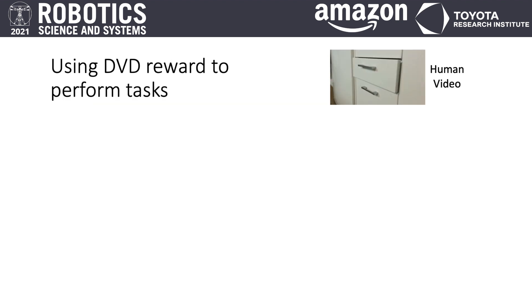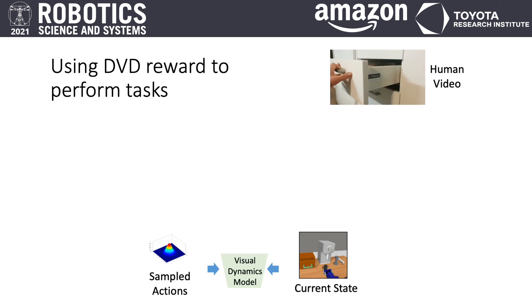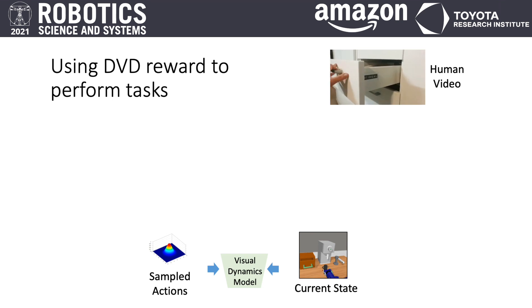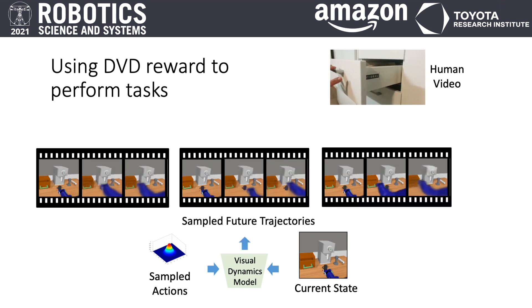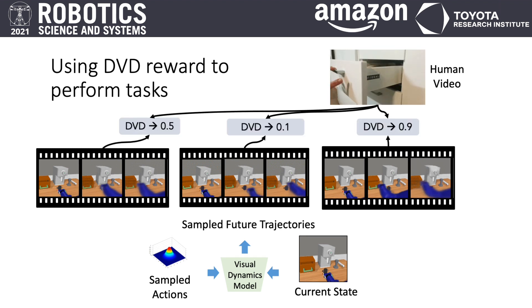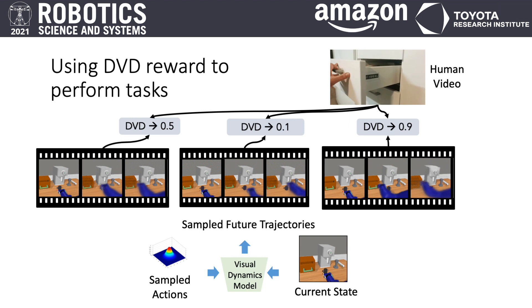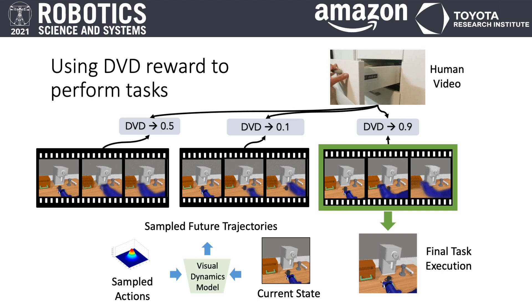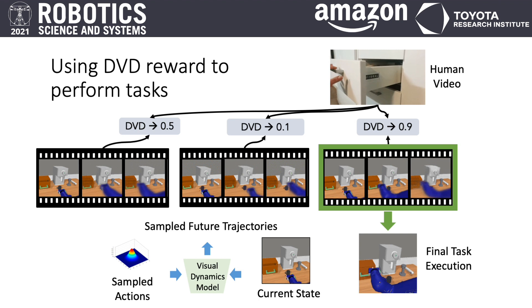In practice, we use DVD in the following way. Given a human video of a potentially unseen task, we want our agent to complete that task in its environment. At the robot's current state, we perform model predictive control, first sampling action trajectories and feeding them into a learned visual dynamics model. The visual dynamics model then predicts corresponding sequences of image states. We feed these predicted image trajectories along with the given human video into DVD, which gives us a measure of how functionally similar each trajectory is to the given video. Finally, we execute trajectories that DVD scores as having high similarity to the human video demonstration.